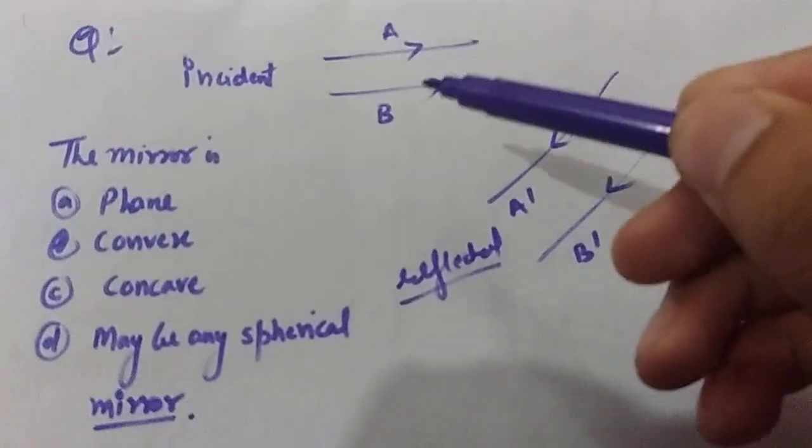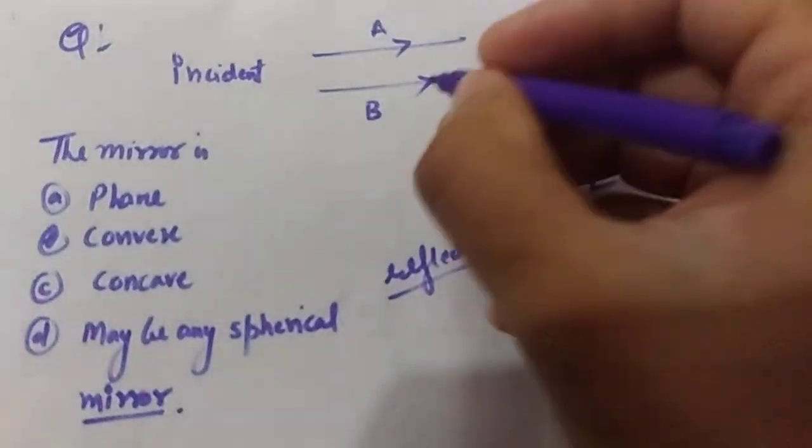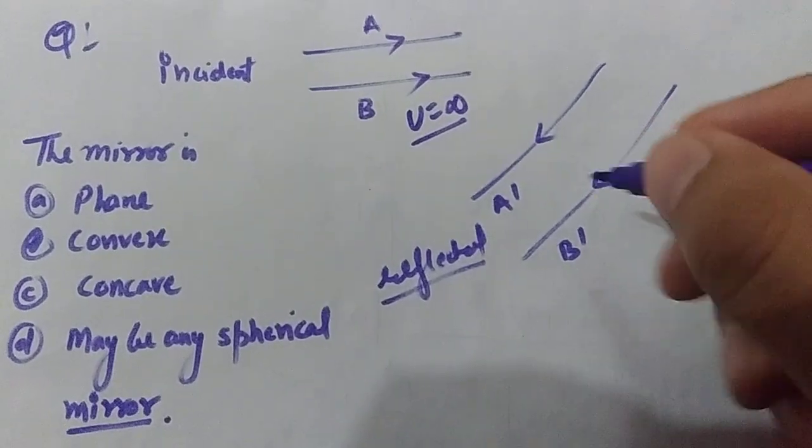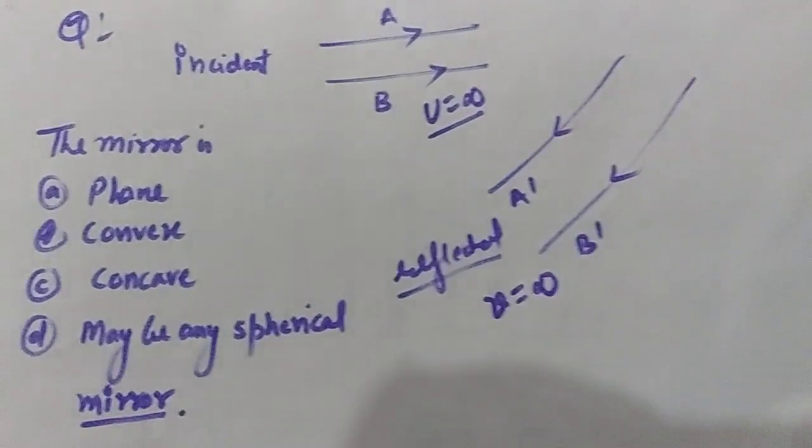Both incident rays are parallel, so obviously U for this case is infinity because the rays are parallel, and the reflected rays are also parallel, or we can say that V is also infinity in this case.